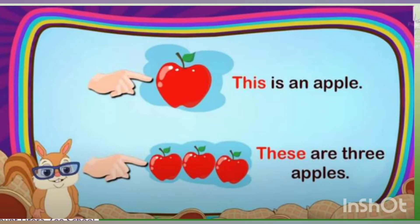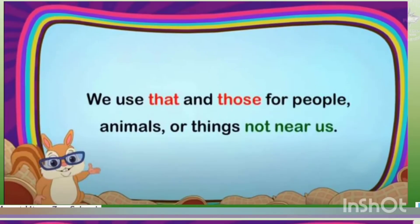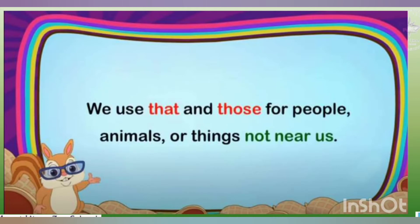Here the apple is near to us, so we say 'This is an apple' for singular, and 'These are three apples' for plural. We use 'that' and 'those' for people, animals, or things far away.